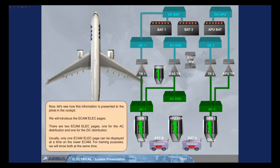Now let's see how this information is presented to the pilots in the cockpit. We will introduce the ECAM electrical pages. There are two ECAM electrical pages: one for the AC distribution and one for the DC distribution. Usually, only one ECAM electrical page can be displayed at a time on the lower ECAM.